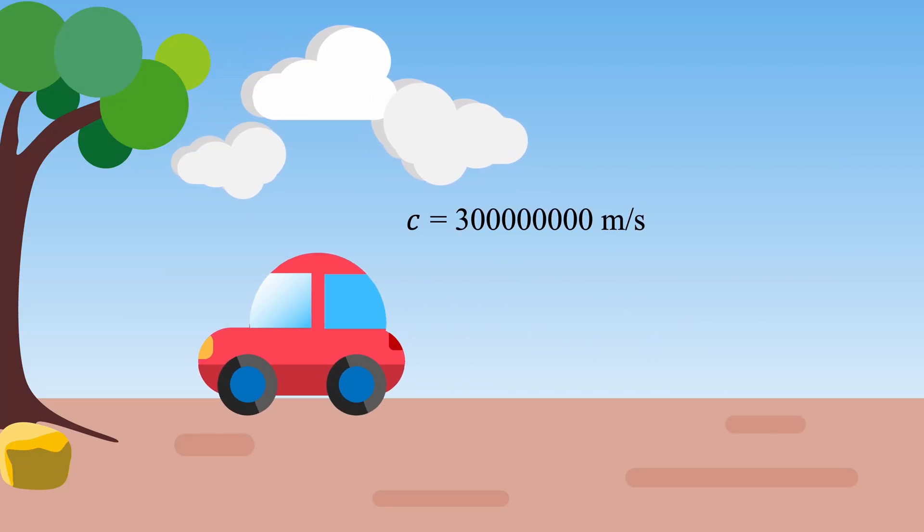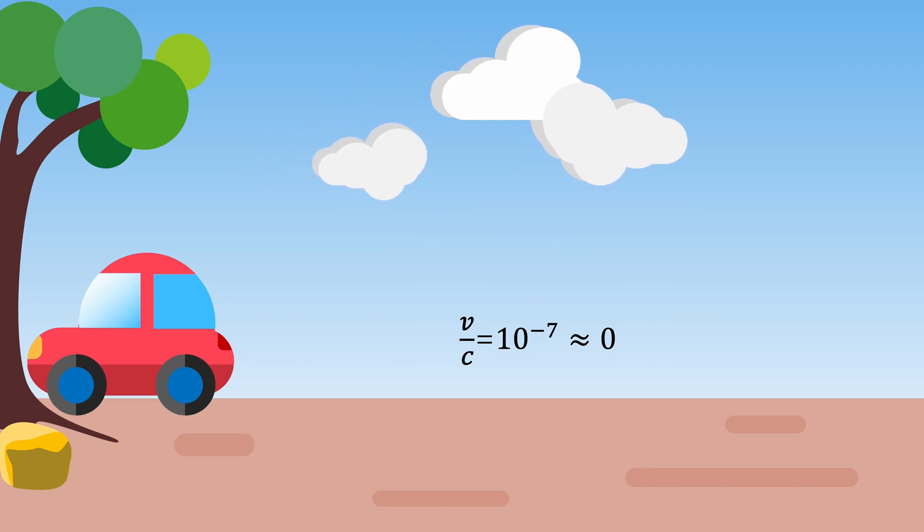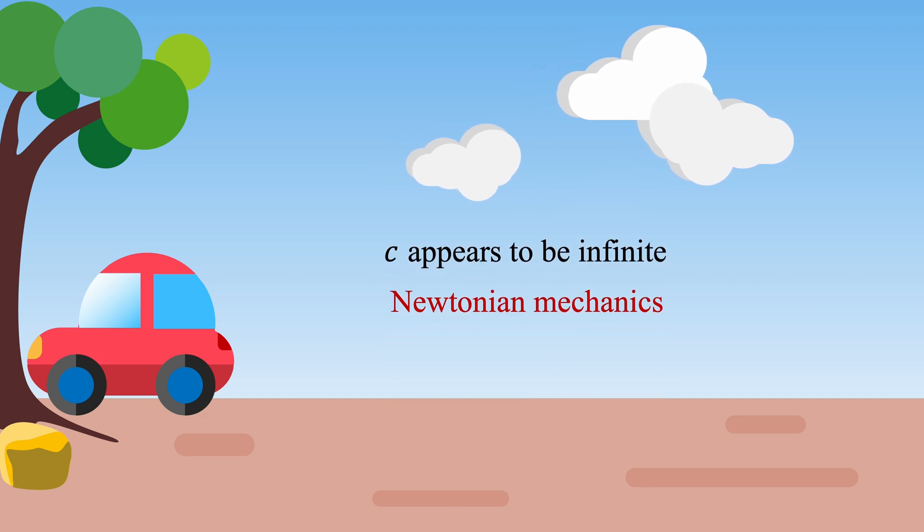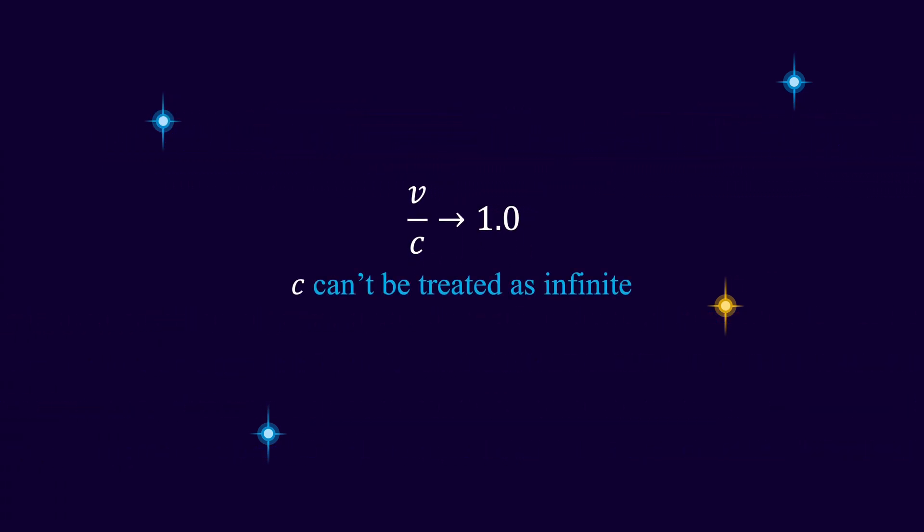Because the speed of light in vacuum is so much faster than the velocities of everyday objects, Newtonian mechanics, which assumes infinite value for c, seems accurate enough for our common experiences. However, for objects with speeds approaching the speed of light, the assumption that c is infinite is no longer valid and Newtonian classical mechanics breaks down.